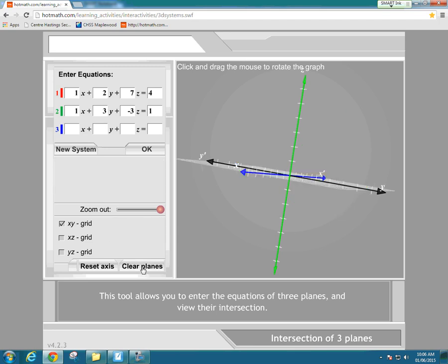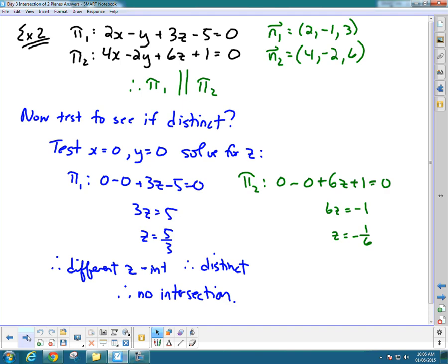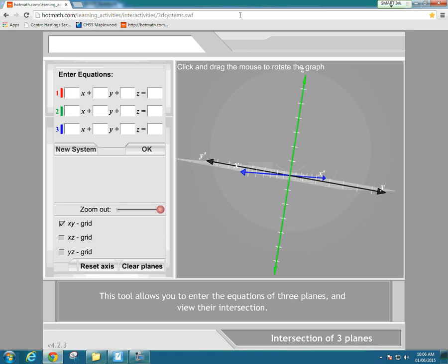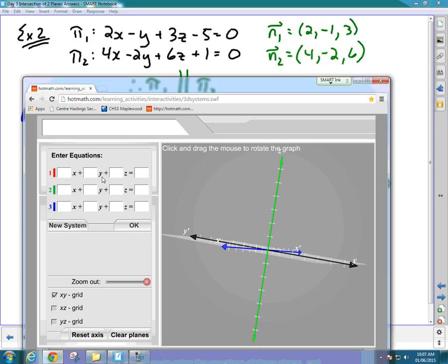I'm going to clear those and show the second example. Remember in the second example we found out that these were parallel and we did the test to see if they were distinct. It turns out they weren't, so there's no intersection. Let's try this with these equations.